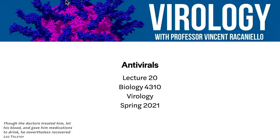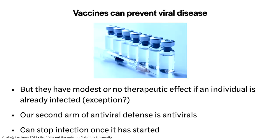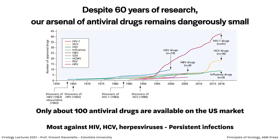Welcome back everyone. This is lecture number 20 and we're going to talk about antivirals. Remember last time we talked about vaccines — vaccines can prevent viral disease but usually don't have much effect if someone is already infected, with the exception of rabies where we can vaccinate after the virus has come in. So what do you do if you don't have a vaccine or haven't been vaccinated? That's where antivirals come in — they can stop an infection once it has started, although in some cases you can't wait too long after infection before it becomes too late. We don't have a lot of antiviral drugs.